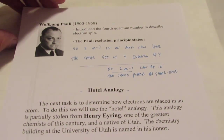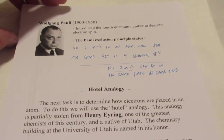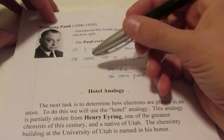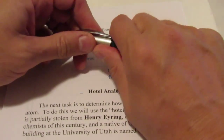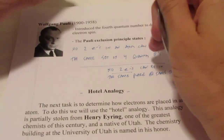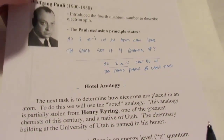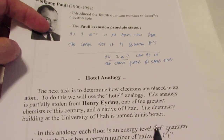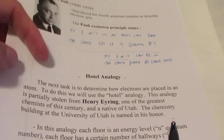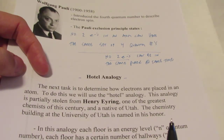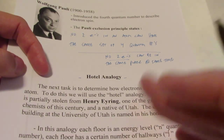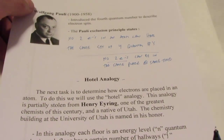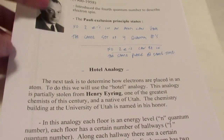All right, we are back. We've just finished talking about quantum numbers — we've defined the four quantum numbers. Now we're going to apply the idea of quantum numbers to how electrons enter an atom, how they actually buzz around the atom and where we would possibly find them.